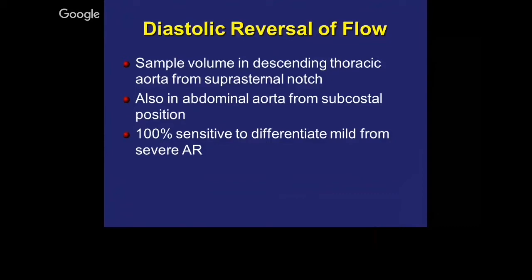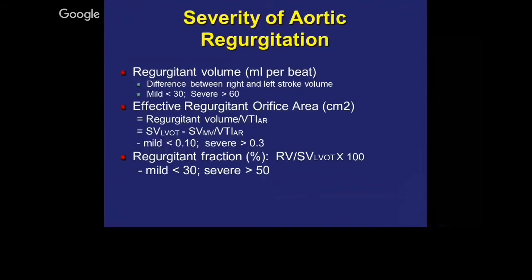We also look in the aorta — either the abdominal aorta or the ascending aorta — for flow reversal. That shows us that the jet is so severe that flow is getting reversed in the ascending aorta — the echo version of pistol shot femorals and all those other signs you learn as a student. You can calculate the effective regurgitant orifice area using the same conservation of mass principle, using the mitral and aortic valves — what goes in must come out — and rearrange the equation to get the effective regurgitant orifice area.